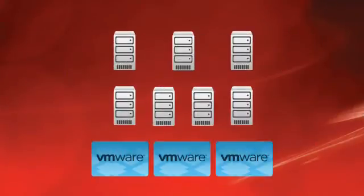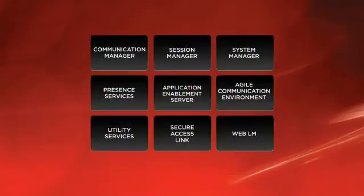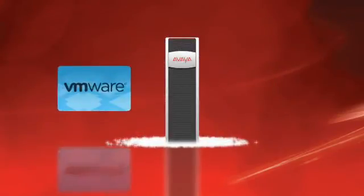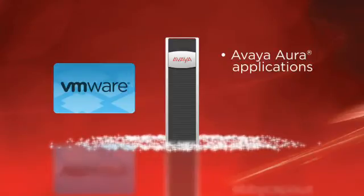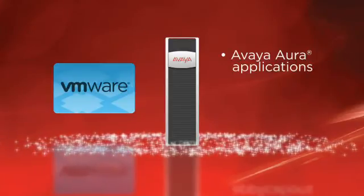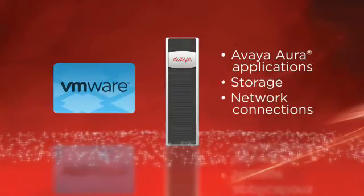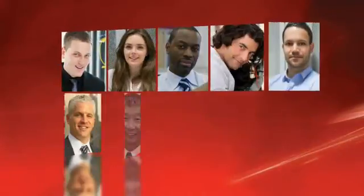Now you have options. Implement Avaya real-time collaboration solutions on virtual appliances using VMware, or continue using Avaya-provided servers and software. You can also take advantage of the collaboration pod — it comes with VMware and virtualized Avaya Aura applications pre-installed, along with storage and networking. All ready to go.